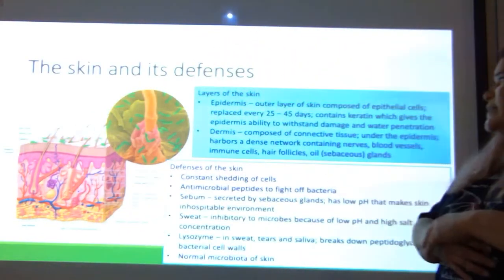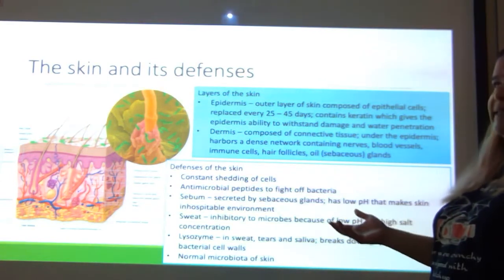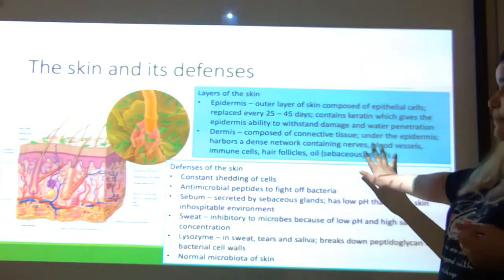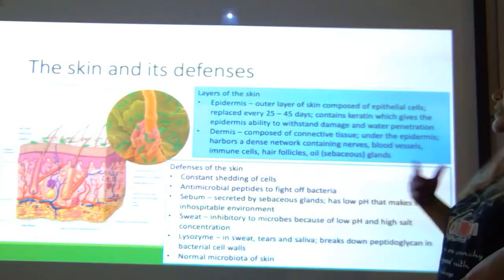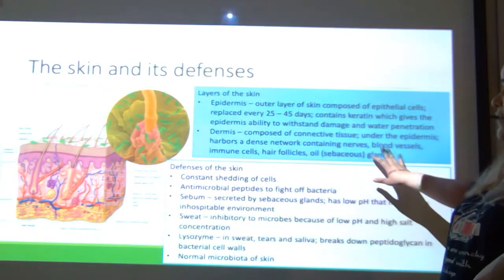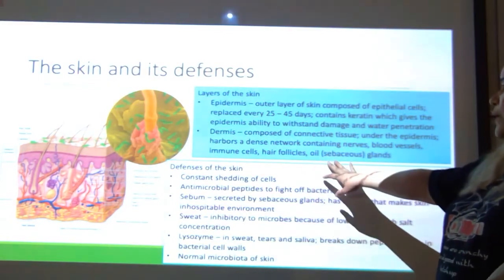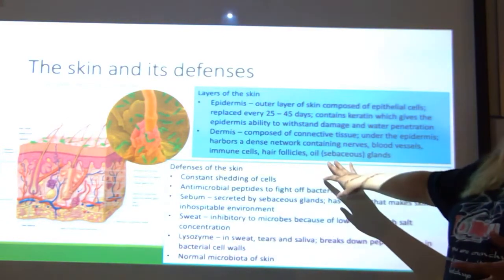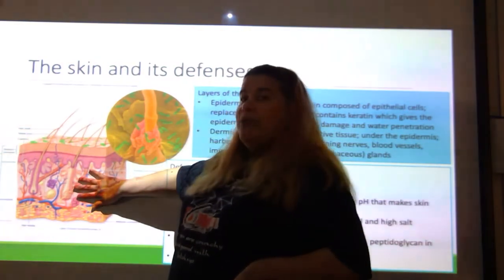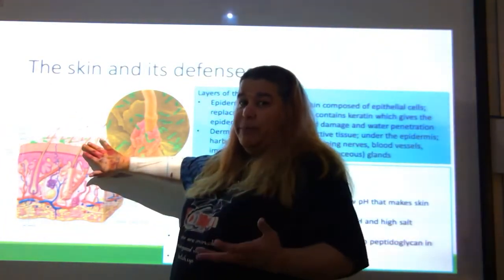The dermis is composed of connective tissue — it connects things together. It's under the epidermis and harbors a dense network containing nerves, blood vessels, immune cells, hair follicles, and oil or sebaceous glands. This is a lot more interesting than a stack of bricks, which is pretty much what the epidermis is.